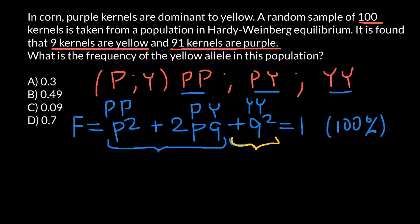We have yellow and purple. And we're told that frequency of the yellow genotype is 9% and frequency of the purple phenotype is 91%. Together, this makes 100%. As you see, 1 equals 100%.